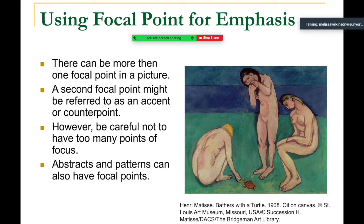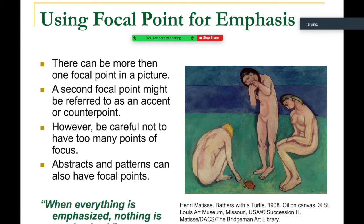Abstracts and patterns can also have focal points, because all of these things are simply shapes. When those shapes are configured in a certain way that allows a suggested line or directional thrust, you get an abstract image. When everything is emphasized, nothing is emphasized. Whenever you have only pattern, you're completely depleting an image of a focal point.